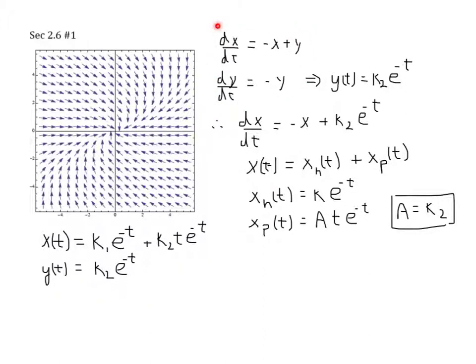We start with this system. This is a partially coupled system, and we know as a first step that we can say for sure what the function y must be. This is something from chapter 1. y of t must be a constant times e to the minus t if the derivative of y with respect to t is just negative y.